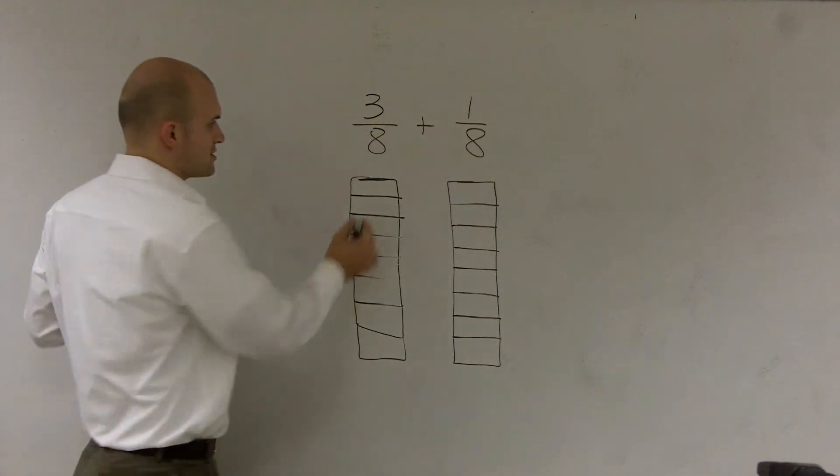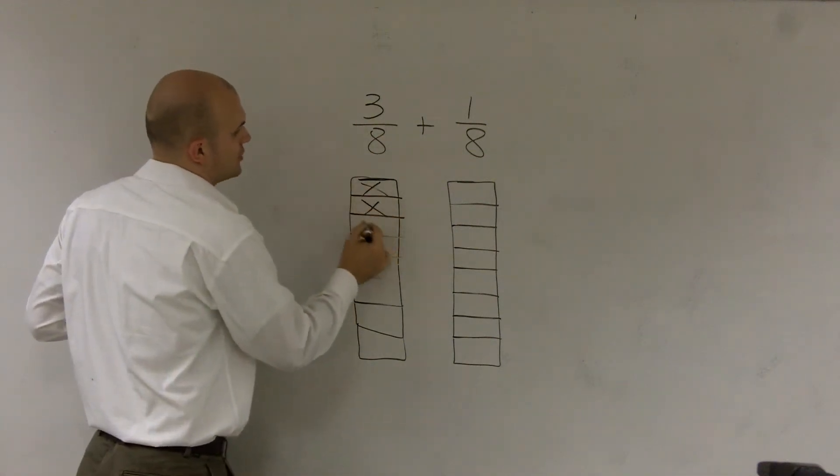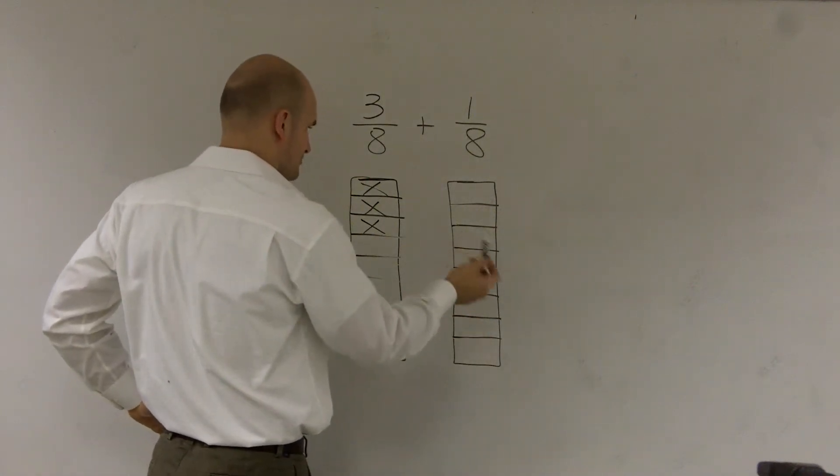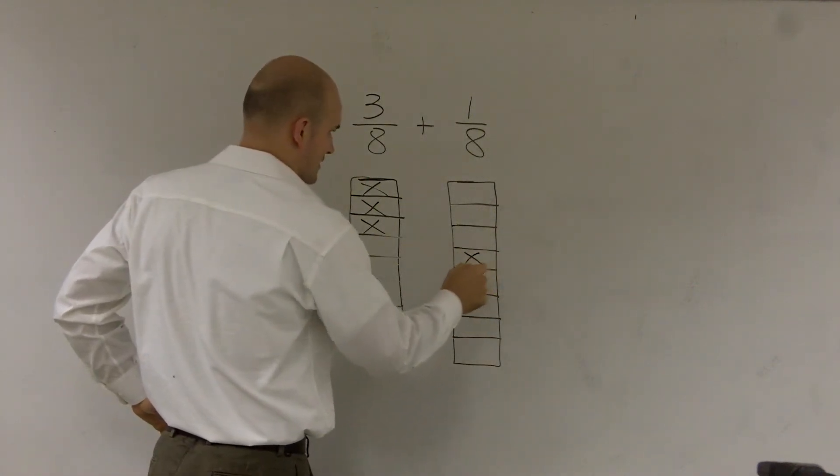So this says there's three parts. So I'll say one, two, three. And this one says there's one part. So let's just do here.